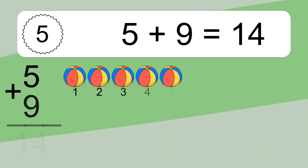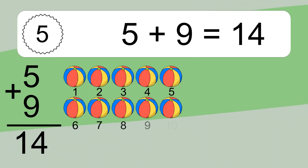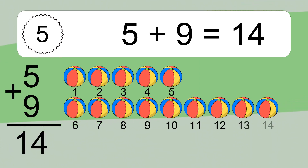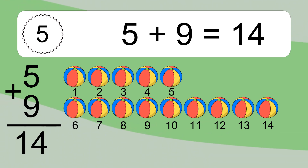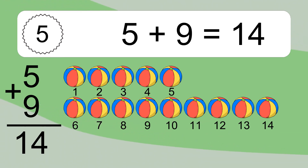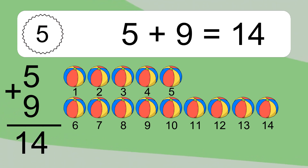5 plus 9 equals 14. Let's count it. 1, 2, 3, 4, 5, 6, 7, 8, 9, 10, 11, 12, 13, 14.